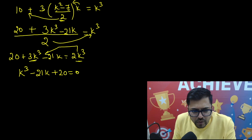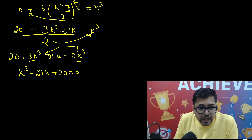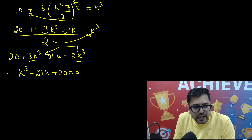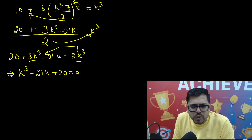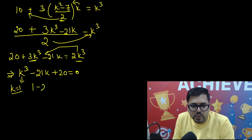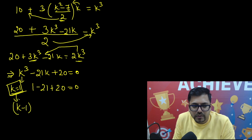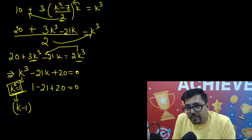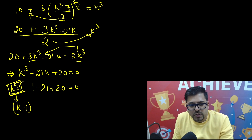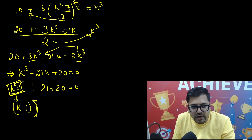We have got a cubic equation. Cubic equations are generally tough, but here you can see very easily that k equals 1 is satisfying it — putting in: 1 minus 21 plus 20 equals 0. This means k equals 1 is a zero of this equation, so k minus 1 must be a factor. So k minus 1 must divide k cubed minus 21k plus 20.